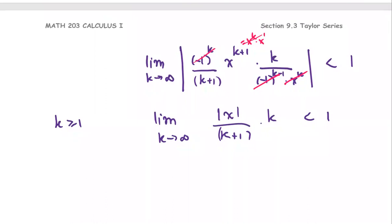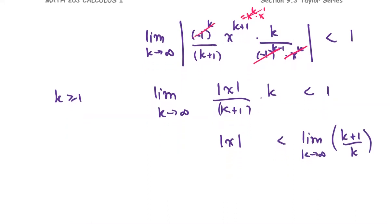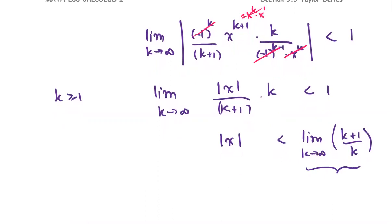Rearranging the inequality, the absolute value of x is less than the limit of k plus one divided by k as k approaches infinity. Taking this limit gives a value approaching one. So the radius of convergence is one.